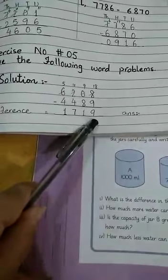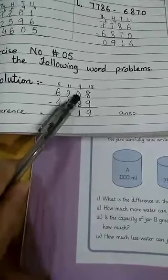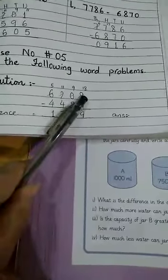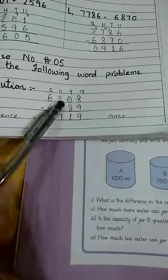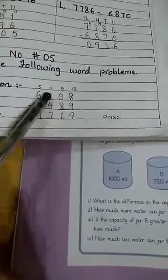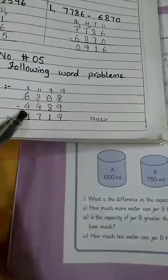8 minus 9 is... we can't do that. Students, we don't have enough, so we can't carry from 0. We are making it from 2 and 1. The register is 1 and 9. So 9 minus 8 is 1. 11 minus 4 is 7, and 5 minus 4 is 1. Here is simple subtraction.